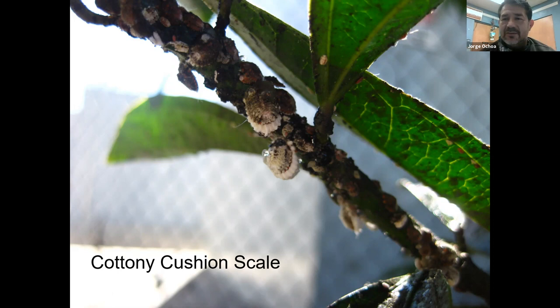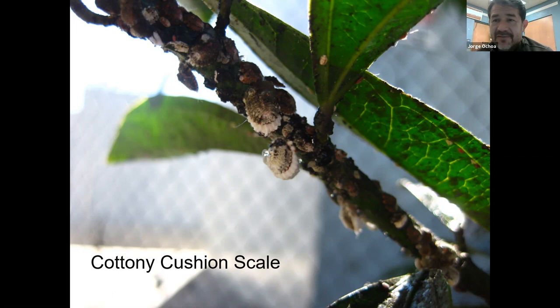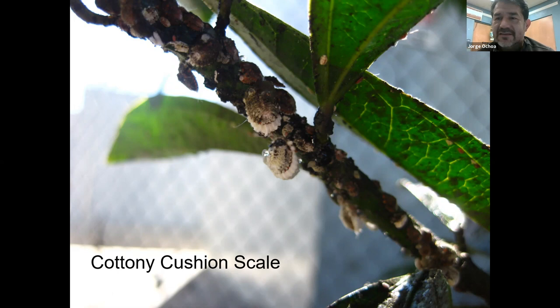A very famous scientist discovered that lady beetles, or ladybugs, would be a very good way to control these insects. He raised them, grew them, and released them, and sure enough within a few years the number of cotton cushion scale went very low and was under control. The insect was not exterminated — it is still here — but having a biological control prevents the population from skyrocketing to the point where it becomes a problem.